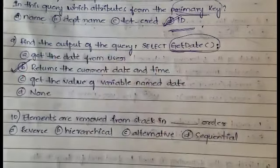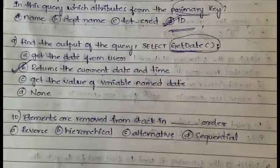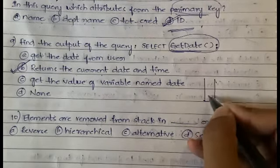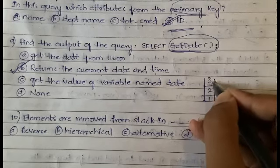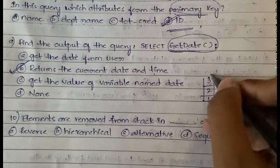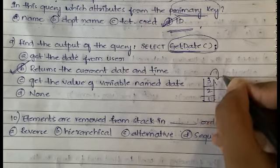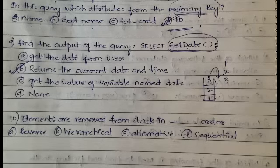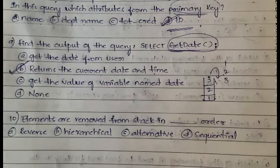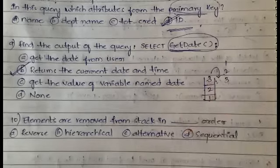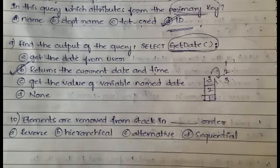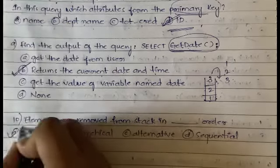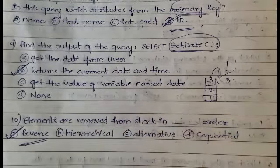Elements are removed from stack in what order? Let's suppose we have a stack with one, two, three. If you want to remove elements, first you remove three, then two, then one. The order you inserted is one, two, three. The order you removed is three, two, one. That means you are removing elements in reverse order.